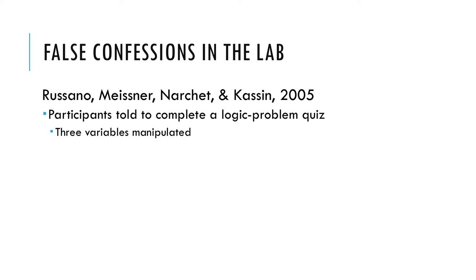The three variables manipulated in this 2005 study included guilty versus innocent. Using the Confederate, if the participant did help the Confederate, then they were guilty — they cheated on the task. But if they didn't, then they were innocent. So they could manipulate whether participants were guilty or not.